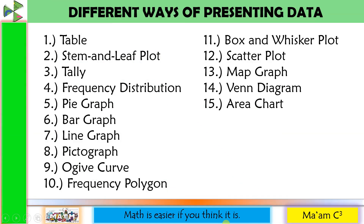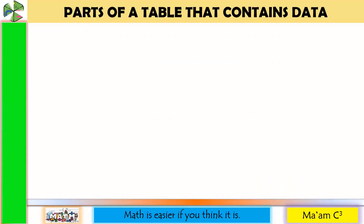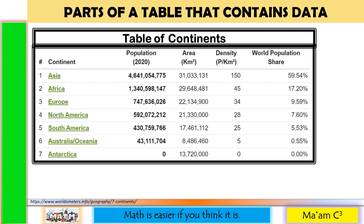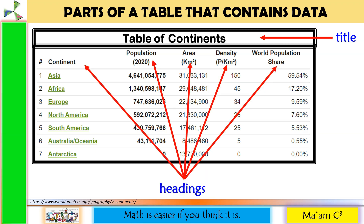Here are different ways of data presentation. We are not going to discuss all of these now. In this lesson, we will discuss the first two: table and stem and leaf plot. A table is a systematic way of arranging data that are presented in rows and columns. A good table should contain a title to tell viewers what the table is about, and headings on all columns to guide viewers on what kind of information they can find in each column.